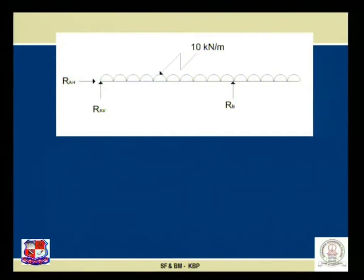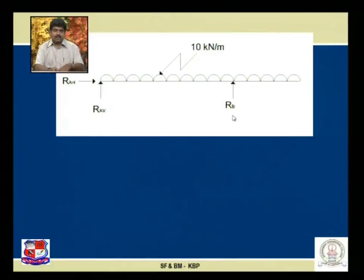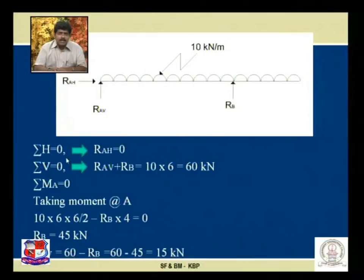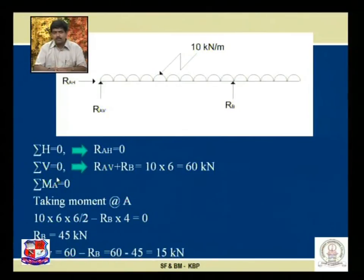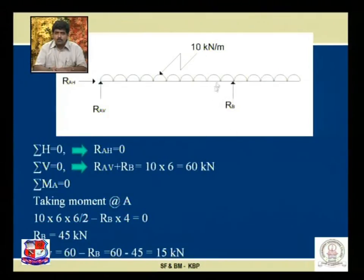Step number one is to find support reactions. At joint A, there is a hinge joint, so there are two reactions: R_AH and R_AV. At B, only a roller support is there, so single reaction R_B. Applying the first equilibrium condition sigma H = 0, there is no horizontal force acting throughout the beam, hence R_AH = 0. Applying sigma V = 0, the sum of all vertical forces equals zero: R_AV + R_B = total downward load = 10 × 6 = 60 kN.